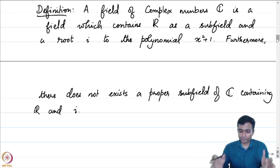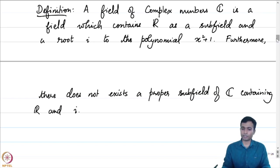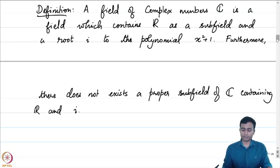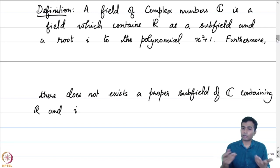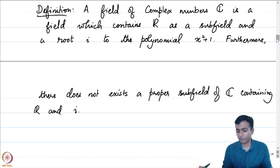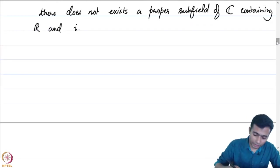This is our definition of a field of complex numbers. However, this definition immediately poses many questions. The first question would be why would there exist such a field of complex numbers. The second question would be: if through another method we get hold of another field of complex numbers, can we talk about any uniqueness? Both these questions can be answered satisfactorily.